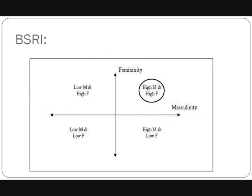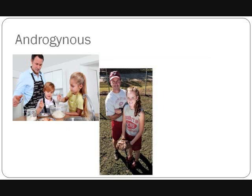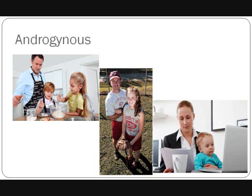The third classification is known as androgynous. This is when an individual, either man or woman, scores high in both masculinity and femininity. Again, this has no implications for the individual's sexuality. The example of the stay-at-home dad could be androgynous — in addition to raising the children, he's also very athletic and competitive, traits generally associated with the masculine gender. Similarly, a successful businesswoman who is strong and aggressive at work could also be warm and sensitive with her children and family. The sex type of these individuals, androgynous, just means that they do not engage in gender schematic processing as much as sex-typed individuals.